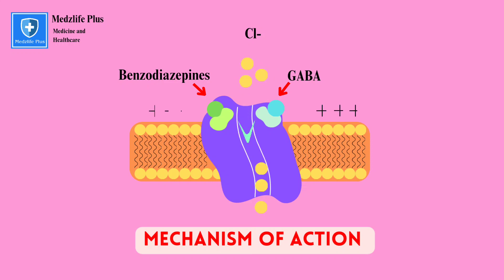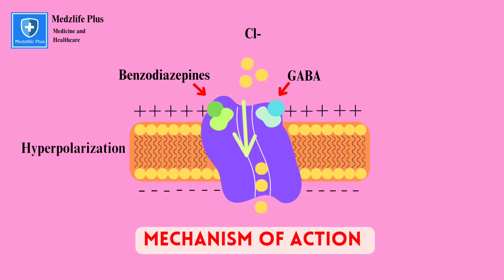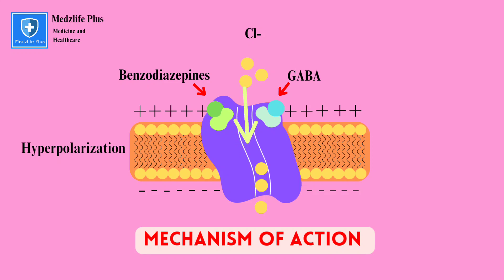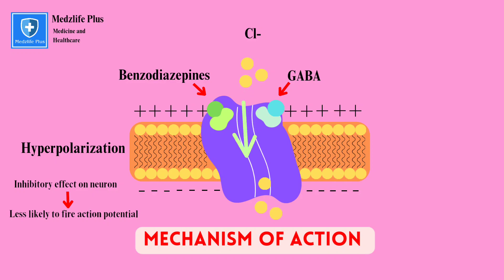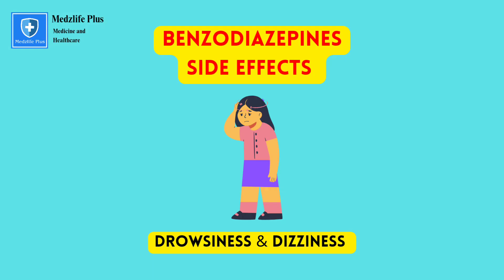When GABA binds and benzodiazepines enhance this process, the chloride ion channel opens up, allowing hyperpolarization. Negatively charged chloride ions make the inside of the neuron's cell membrane more negative than the outside. This increase in chloride ion conductance leads to an overall inhibitory effect on neuronal activity, reducing the neuron's excitability and likelihood of firing an action potential.